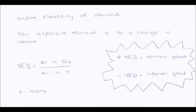So if my income elasticity of demand number is positive, this means the good I'm examining is a normal good. A normal good is one where when income increases, demand for this good will increase. For example, computers: when everybody's income increases they might think 'I'm going to go and buy a new computer with all this extra money,' so demand for computers increases — shown by a positive YED.